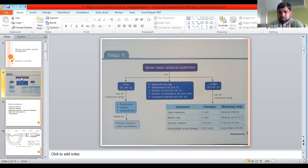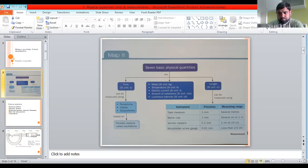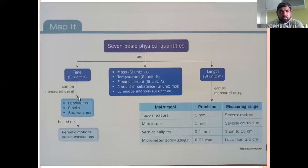We'll have a quick review and then discuss some possible questions. I'll be sharing a very detailed topical possible-questions worksheet in the comments box. There are seven basic quantities and we'll discuss five of them: length, mass, time, temperature, and electric current. Amount of substance and luminous intensity will not be discussed in this syllabus.